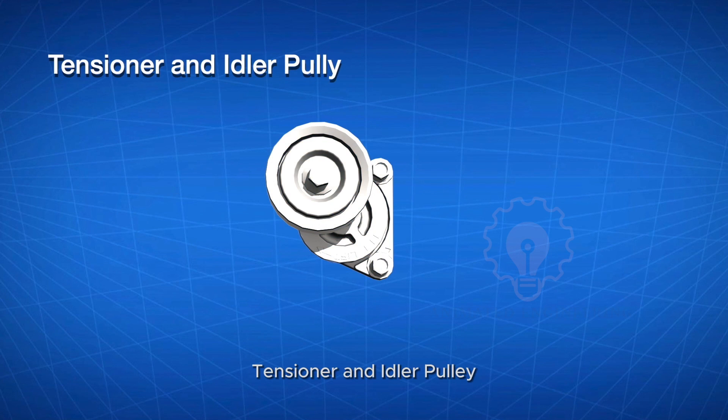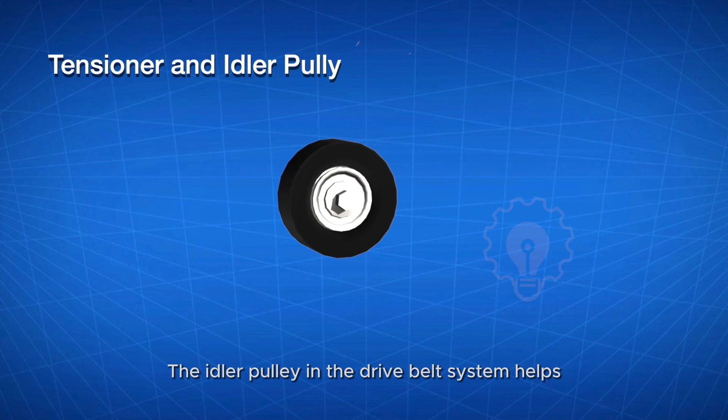Tensioner and idler pulley: The tensioner pulley in the drive belt system maintains proper tension, ensuring the serpentine belt stays snug and efficient in driving the various engine accessories. The idler pulley in the drive belt system helps maintain tension and alignment, ensuring smooth operation of the serpentine belt.